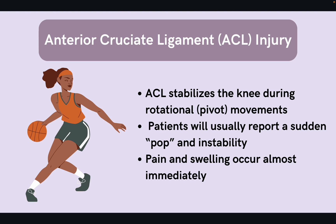Let's start by talking about the ACL, or the anterior cruciate ligament, which is the ligament in the knee that is injured the most. The ACL helps to stabilize the knee during rotational movements, typically during activities where athletes have to pivot, making it a common sports injury. With ACL injuries, patients will usually report that they heard and felt a sudden pop and then their knee gave way on them. Another helpful diagnostic clue is that pain and swelling occur almost immediately, usually in less than an hour.